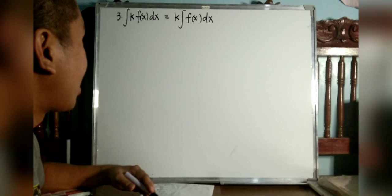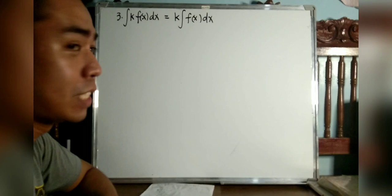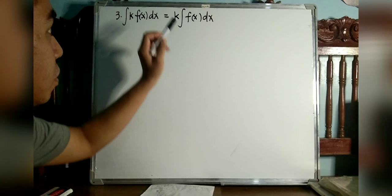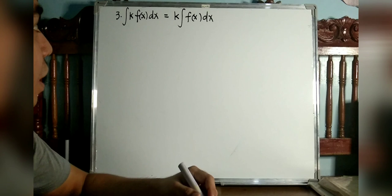Example number three: the integral of k times f(x) dx equals k times the integral of f(x) dx. This means if we have a constant next to a function of x, we can factor out the constant and integrate the function inside.